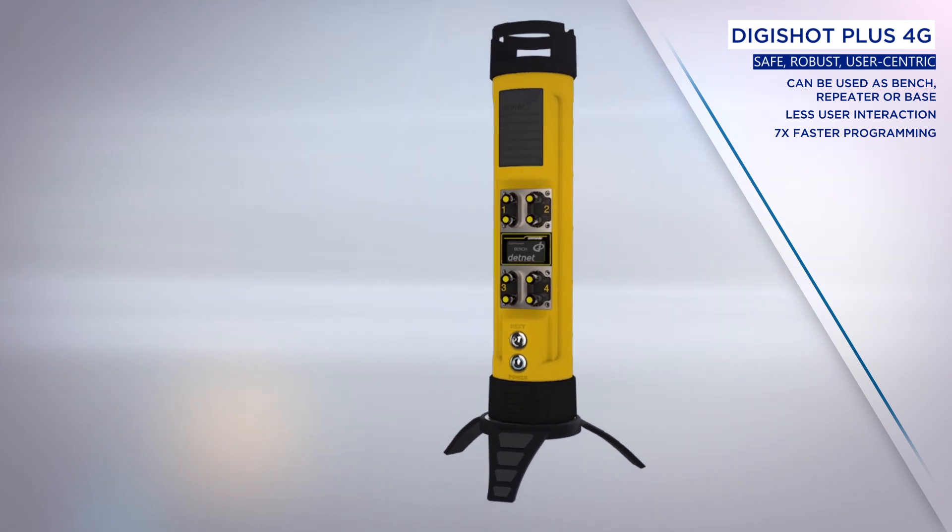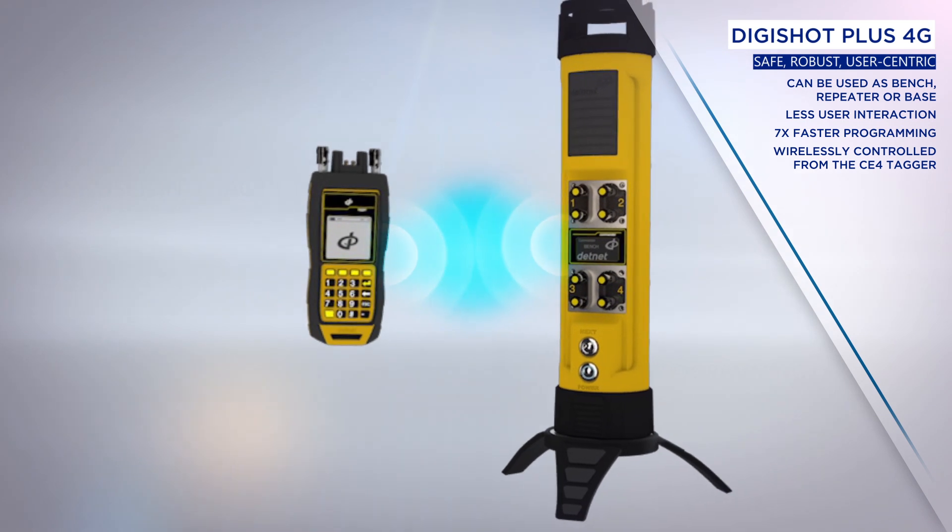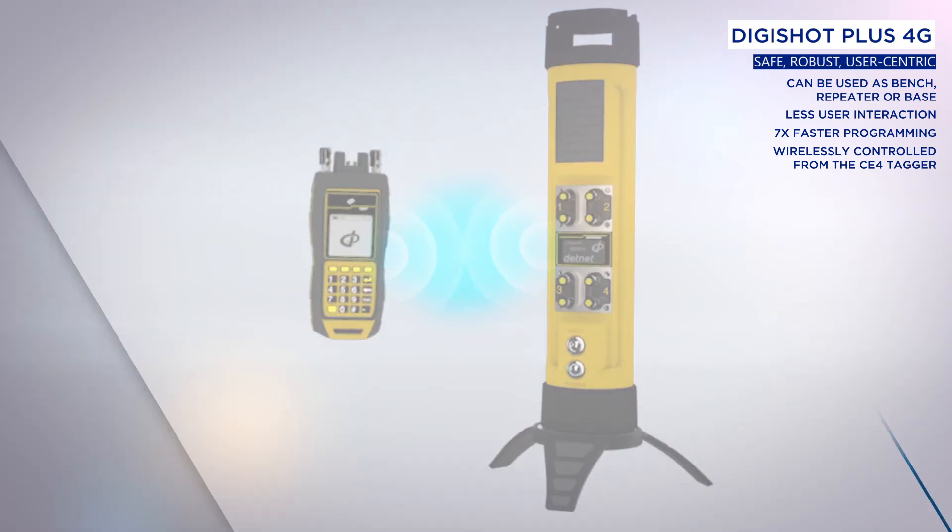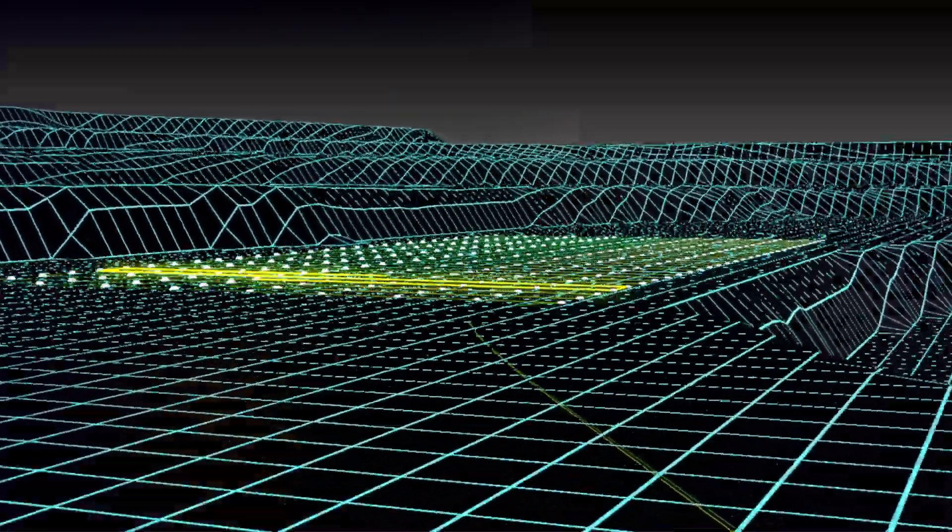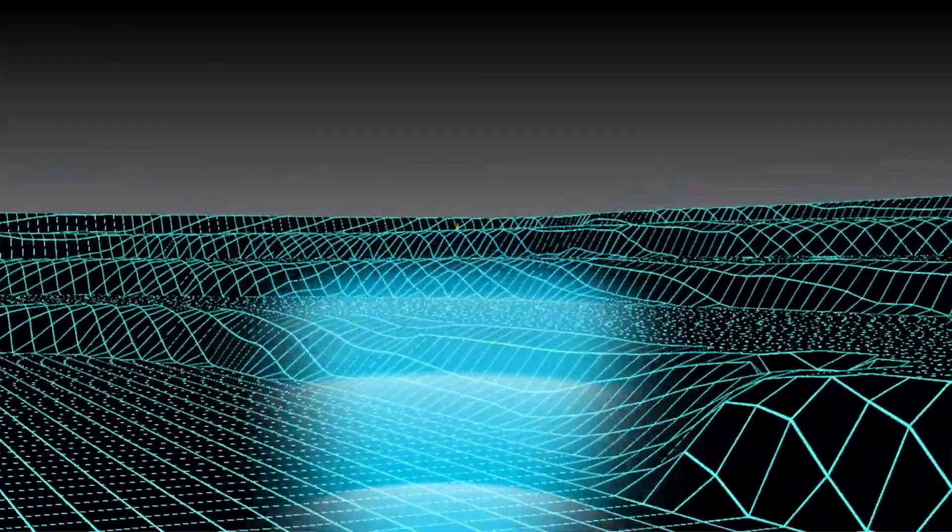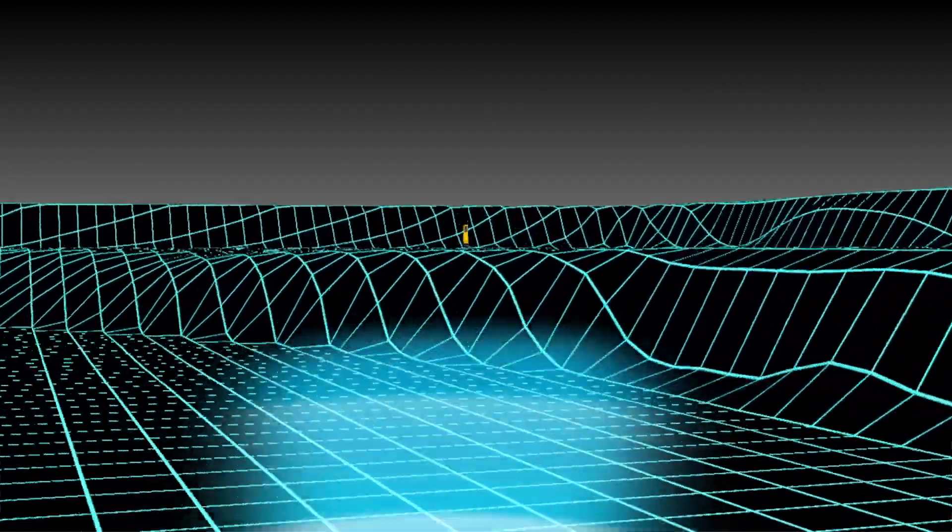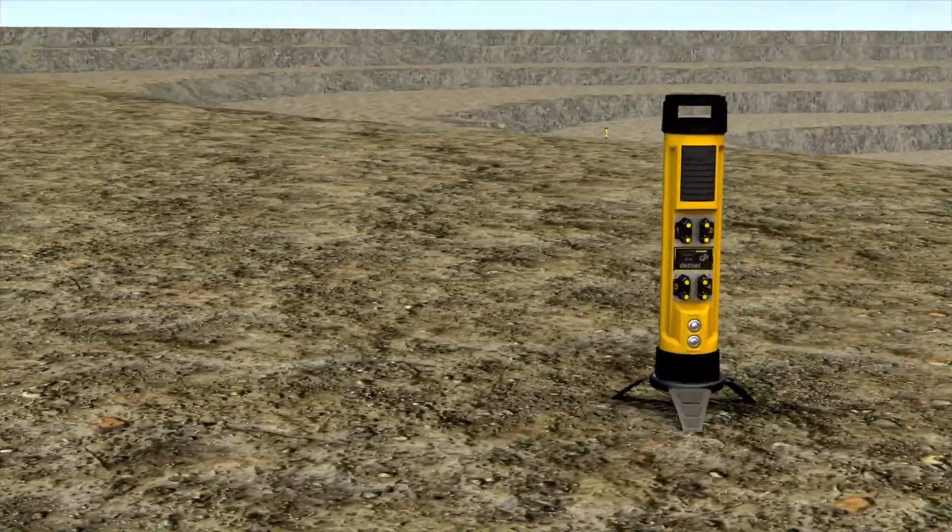The DigiShot Plus 4G commander is wirelessly controlled from the CE4 tagger. It also monitors the energy stored in the last detonator right up to the point of blasting, making it possible to blast through high levels of leakage. With a communication range of up to 3,000 meters using a built-in long-range antenna, the DigiShot Plus 4G system is designed for sheer performance in the harshest mining conditions.